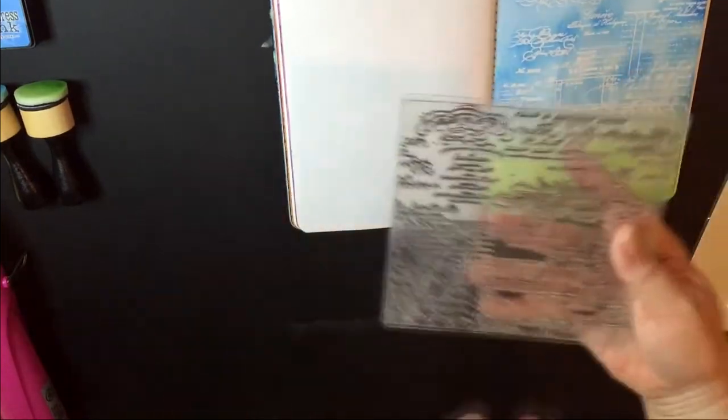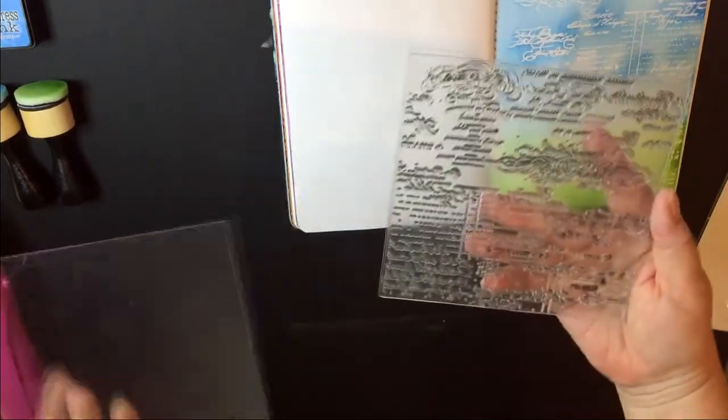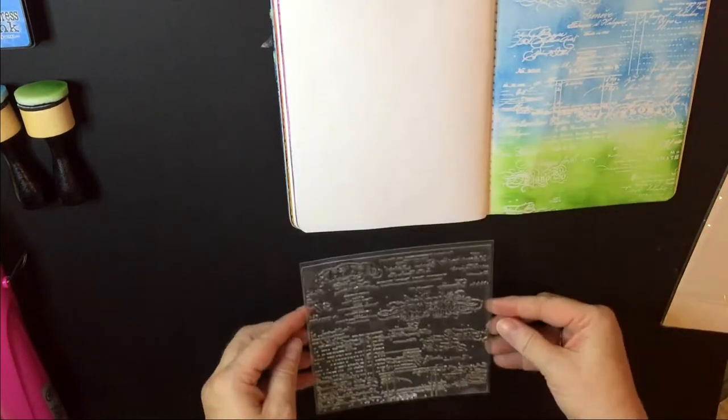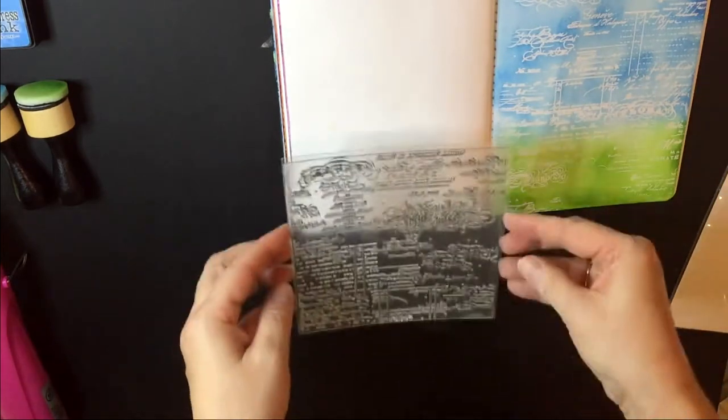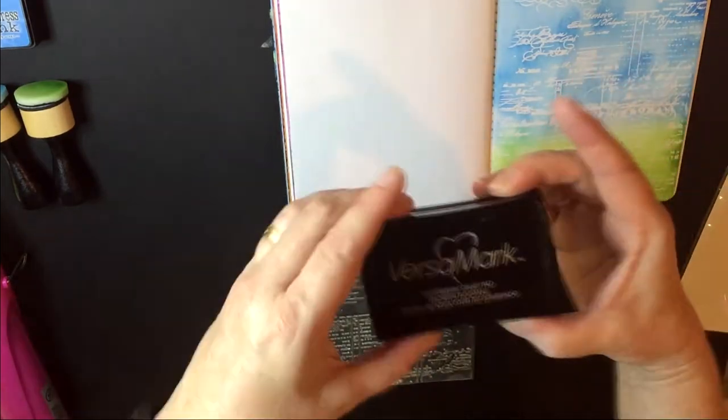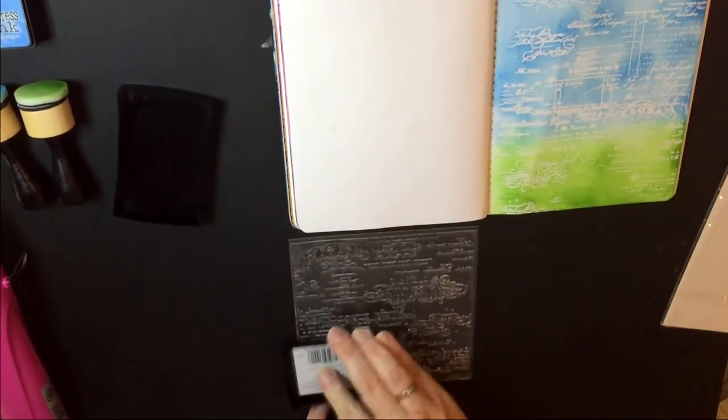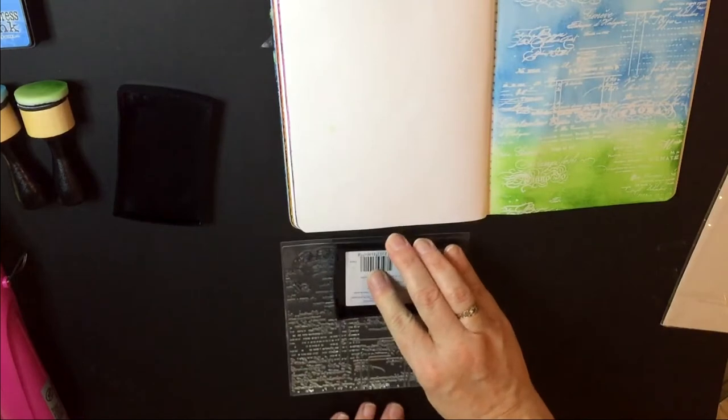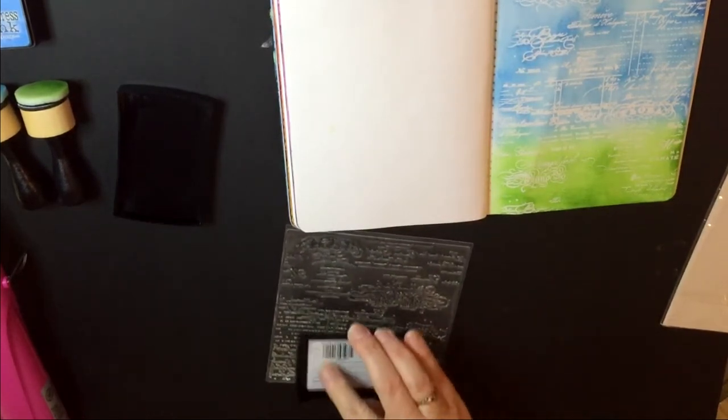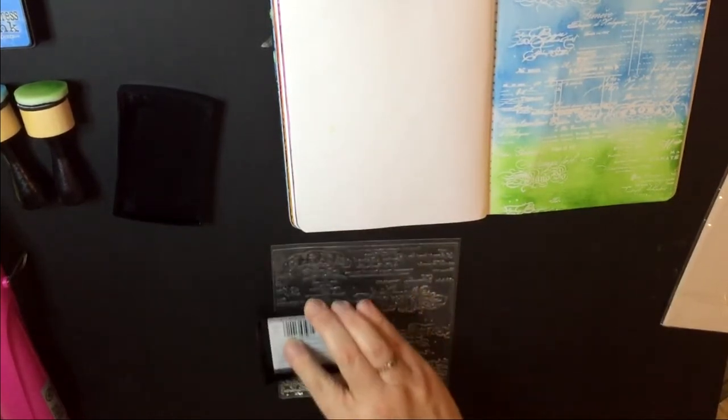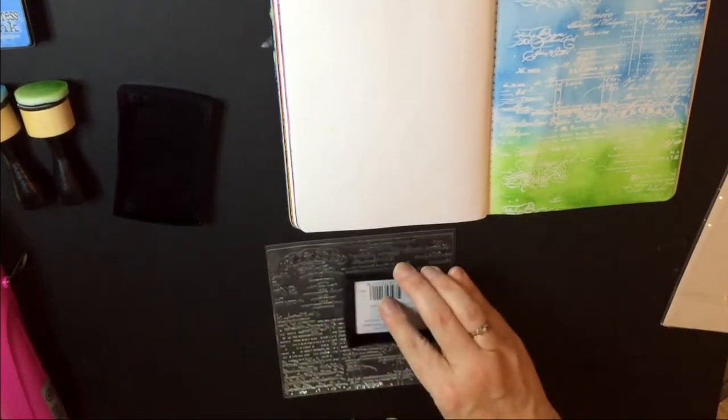Okay, so now I've prepped my page. I'm going to take the backing off the stamp - I leave the stamp actually stuck to the front of the plastic. And I'm going to use the Versamark ink and put that all over this stamp just like that so it's all nice and sticky.